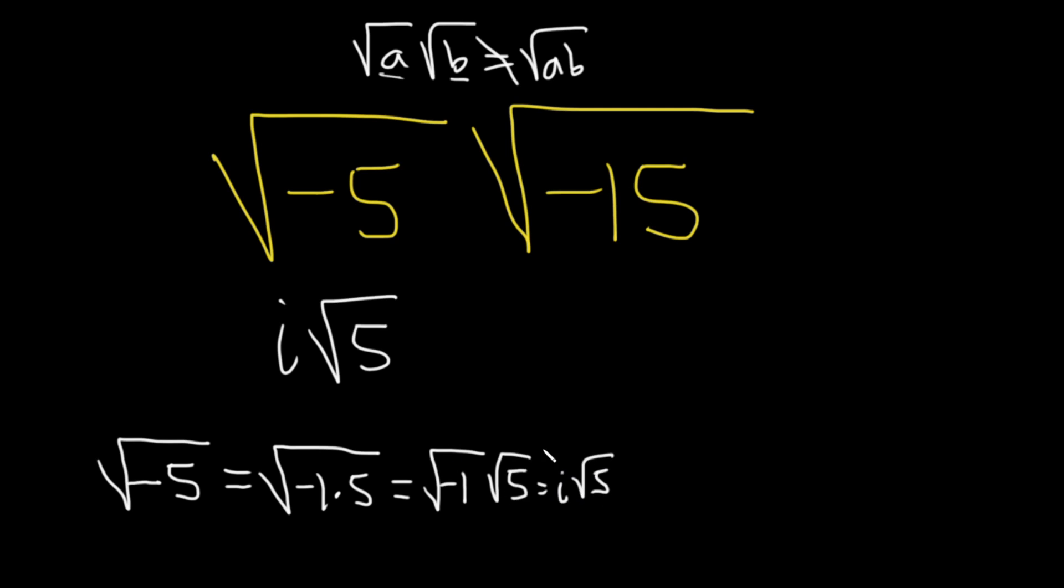In general, people don't go through this process, but you should at least understand where it comes from. So generally, when you have a negative, you just put an i here and the negative goes away. Same thing here. This is i square root 15. But that's what's happening kind of behind the scenes.